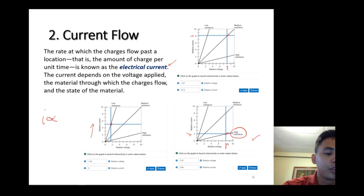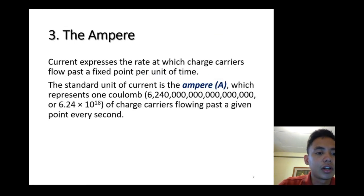Therefore, the formula is actually very simple: the current is directly proportional to the voltage and inversely proportional to the resistance, or I = V/R. We will call this Ohm's law. We'll talk about this in a later topic. The ampere expresses the rate at which charge carriers flow past a fixed point per unit time.